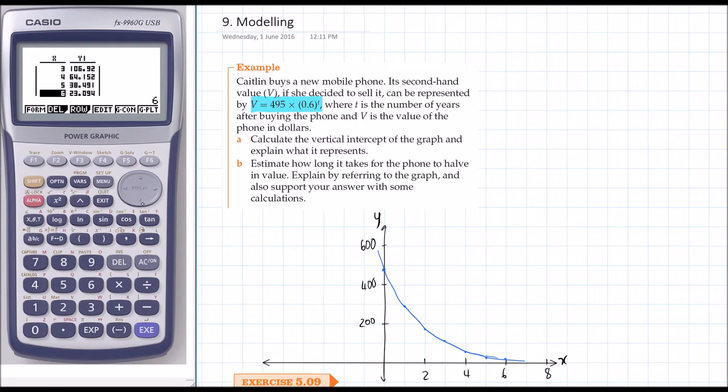Question A is asking us to explain what the vertical intercept means. It's talking about that point there, and that simply is the price at new. So the vertical intercept represents the price brand new.